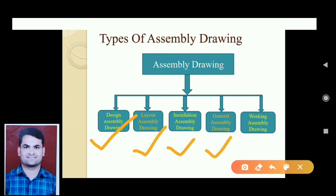The fourth type is a general assembly drawing, which comprises detailed drawings of each individual part, sub-assemblies, and the assembly of the machine. There is also a working assembly drawing — a complete set of drawings consisting of detailed drawings of individual parts and assembly drawings for the location of each part used during the manufacturing phase of a product. It contains all the information needed to manufacture and assemble the product.